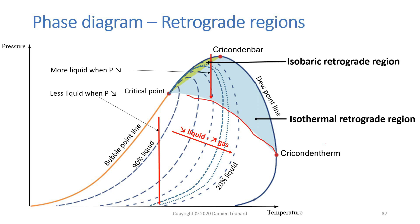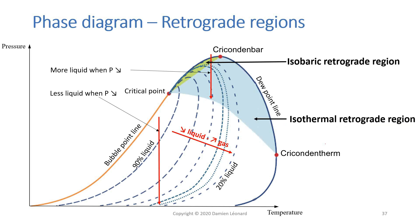This region in blue is called the isothermal retrograde region, meaning it's a retrograde region when you move at constant temperature — so when you decrease pressure at constant temperature. The green region is the isobaric retrograde region, meaning retrograde condensates will form if you change the temperature at constant pressure. I hope this clarifies what a retrograde region is, and therefore what retrograde condensates are.